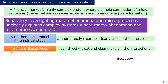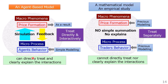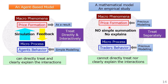On the other hand, an agent-based model can directly treat and clearly explain these interactions. In an agent-based model, the microprocess — agent behavior — is a simple model that simulates output macrophenomena as a result, and feeds back to agent behavior. So it treats directly and interactively both microprocess and macrophenomena. A mathematical model or empirical study treats them separately, so cannot directly treat nor clearly explain the interactions.